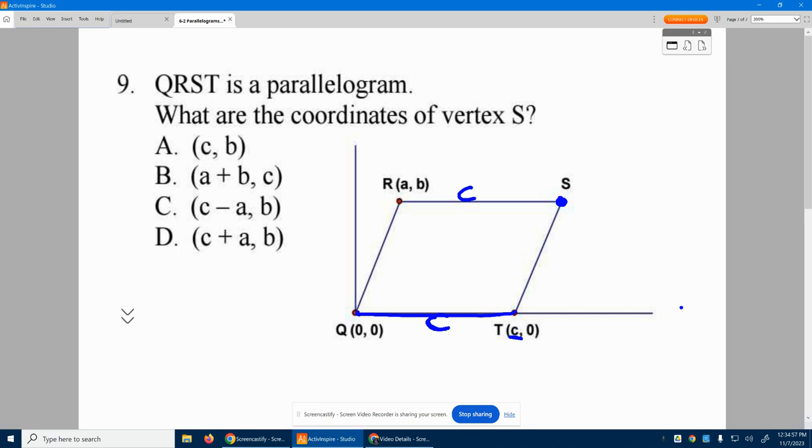Could be 2, could be 5, could be 10, whatever. We don't know. So if you're at (a,b) and you move to the right c units, well,